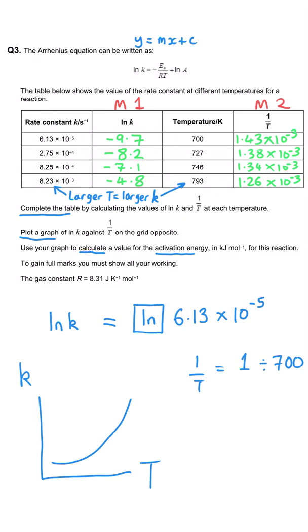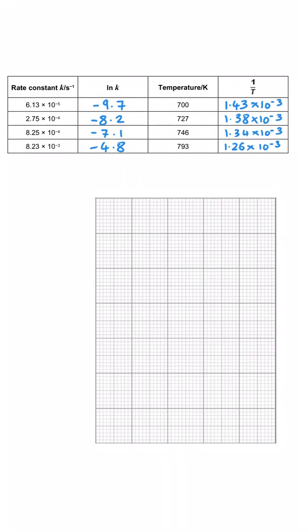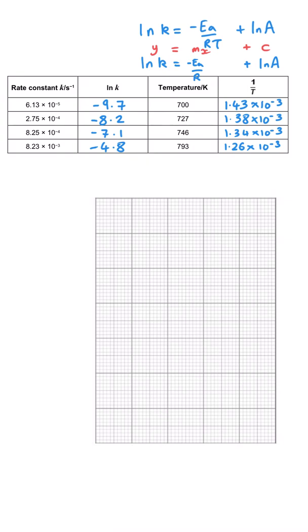The second part asks us to plot a graph in the form y = mx + c. Rewriting the Arrhenius equation: LN(K) is y, LN(A) is c, the gradient m is negative Ea/R, and x is 1/T. So we plot LN(K) on the y-axis and 1/T on the x-axis. The LN(K) values are all negative, so the numbers increase in magnitude as we go down. The smallest value to plot is −9.7, so I suggest going down to −10, and starting from −4.8 at the top.